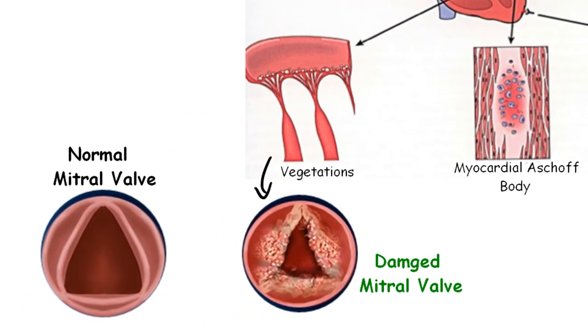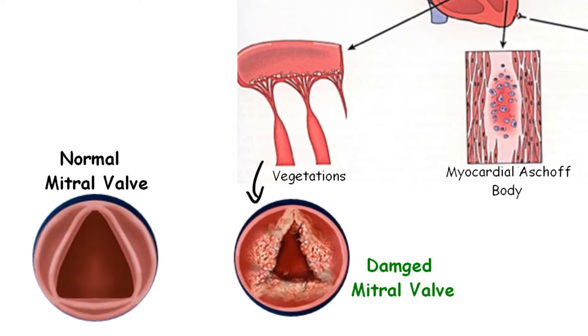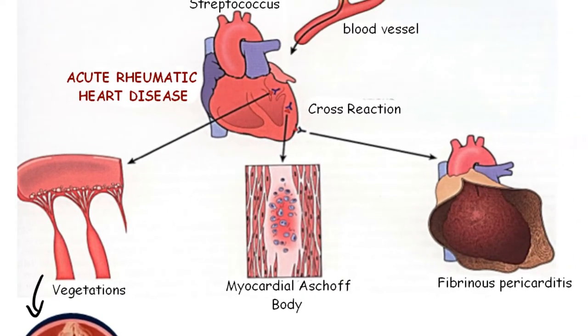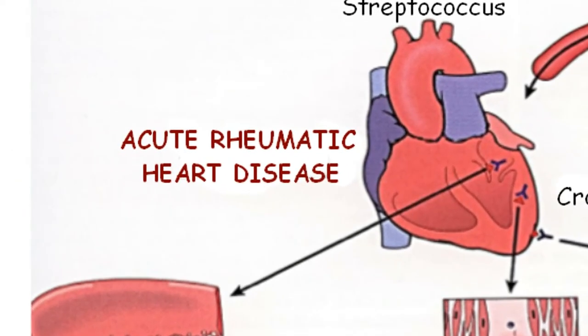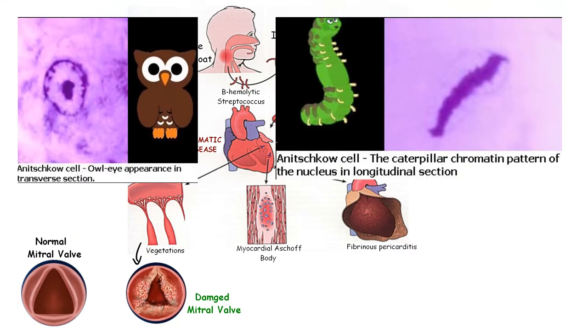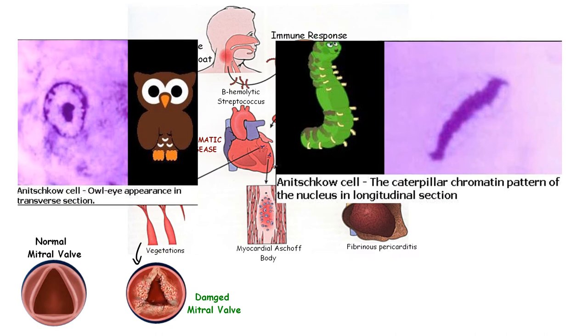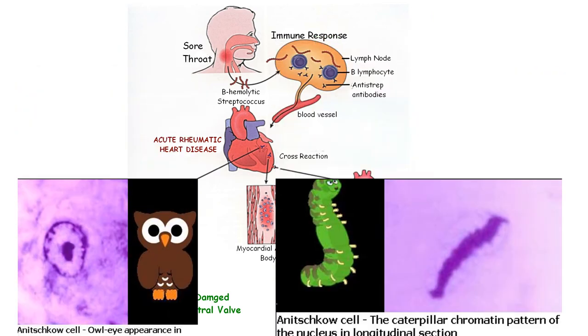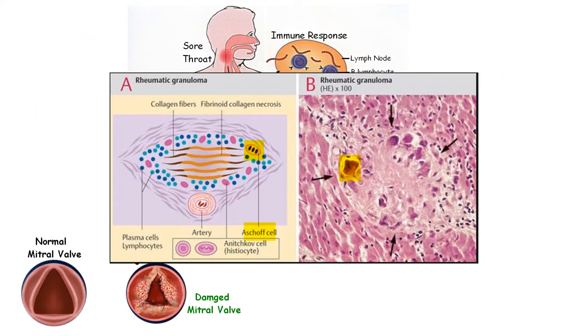If not treated and the heart valves (aka the endocardium) start to get damaged, or heart failure worsens from myocardial damage, that's the point where it's called rheumatic heart disease. The mitral valve is usually affected and it causes mitral stenosis. On myocardial pathology, you may see Anitschkow cells, also known as caterpillar cells. If they're massive, they're called Aschoff giant cells.